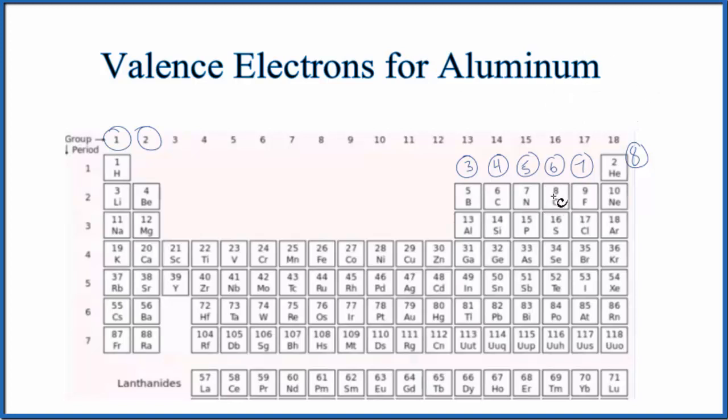The first way is just to look at the periodic table. So aluminum right here is in group 13, sometimes called 3A. So according to the periodic table, aluminum has three valence electrons, just like boron. Boron has three valence electrons. It's in group 13.